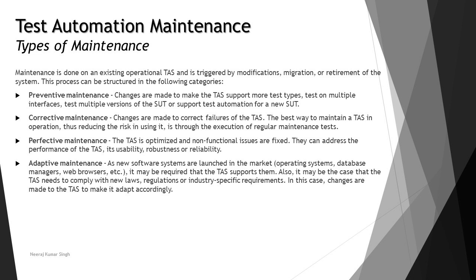The fourth type is adaptive maintenance. As new software systems are launched in the market — including operating systems, database managers, web browsers, etc. — it may be required that the test supports them. For example, if you created a test automation solution and later Chrome updates to a newer version, or a new OS patch is released that obstructs your automation solution, it is very important to update your automation solution accordingly. That is what we call adaptive maintenance — adapting to the latest updates in the environment.